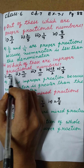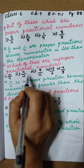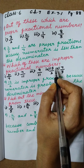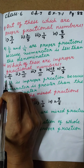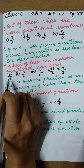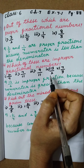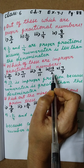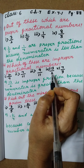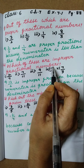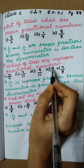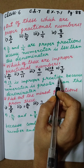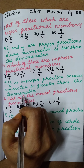We have to observe all these fractions — which numerators are greater than the denominators? Here numerator is less. Here also numerator is less. Here also numerator is less. Here also numerator is less. So which one is greater? See, this is 13 by 2 — numerator is greater than the denominator. So only this one is the improper fraction. 13 by 2 is an improper fraction because numerator is greater than the denominator, right?